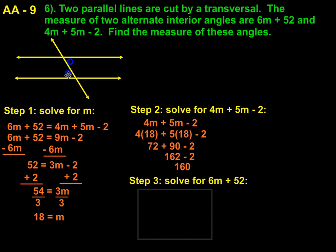Now we know that alternate interior angles are congruent. And so if this is 160 degrees, the second one also has to be. But again, we'll solve it out. So we have 6m plus 52, 6 times 18 gets us 108, plus 52 is 160 degrees.